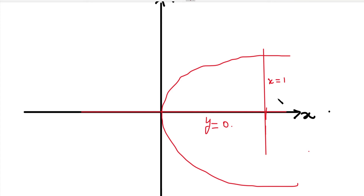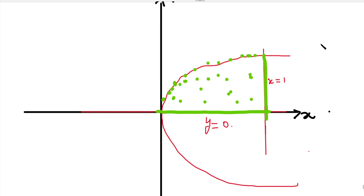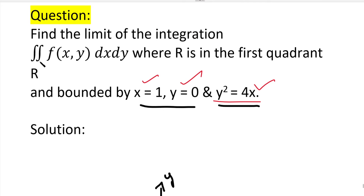Now, using these three given equations, we identify the closed portion they cover. Here one line is x equal to 1, next is y equal to 0, and also the curve y²=4x. The portion covered by all three forms the closed region. From this closed portion, we'll find x and y limits. In the question, the double integral is ∬ f(x, y) dx dy.